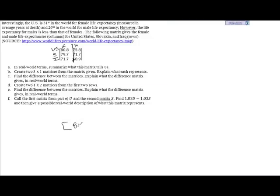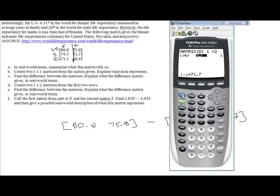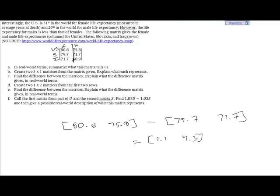Now we want to find the difference between the matrices and explain what the difference matrix gives in real world terms. So we're going to do 80.8 and 75.8 minus the matrix, the 1 by 2 matrix that contains 79.7 and 71.7. We'll do C minus D and we get 1.1 and 4.1.